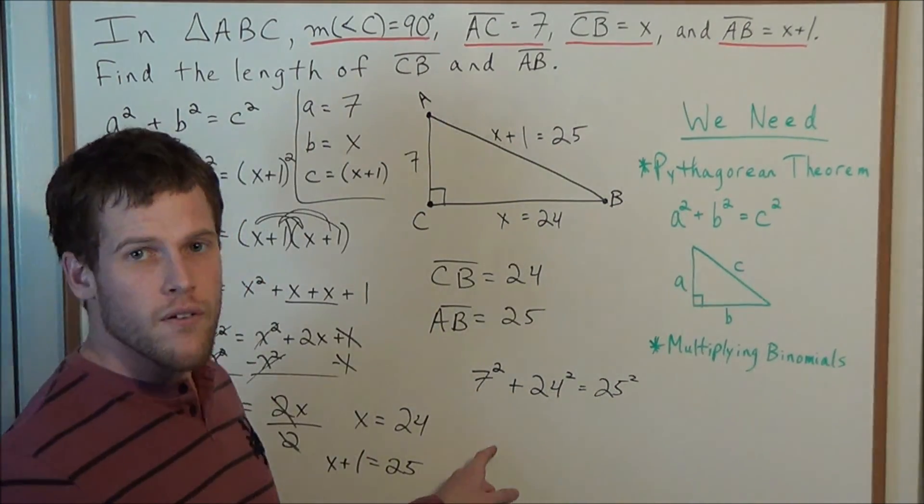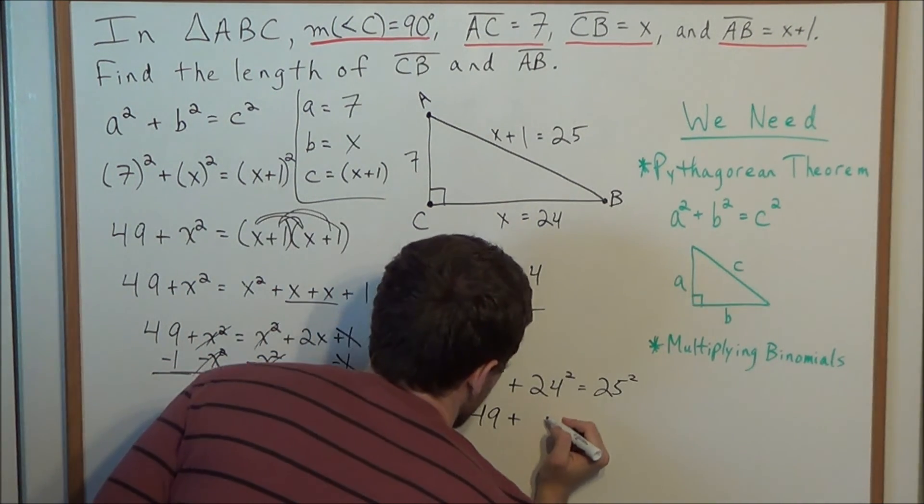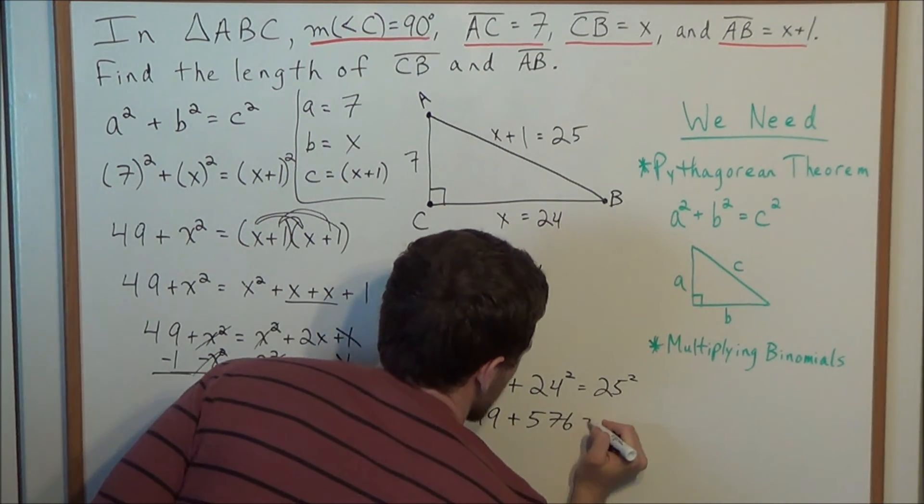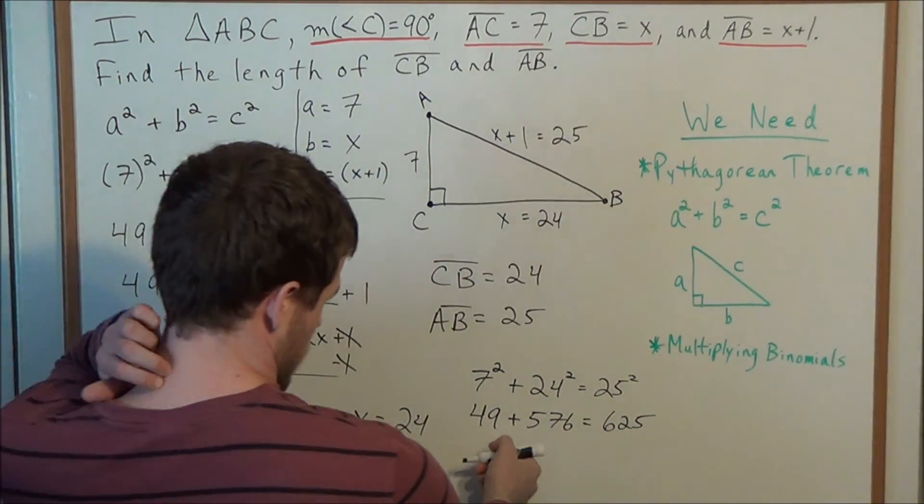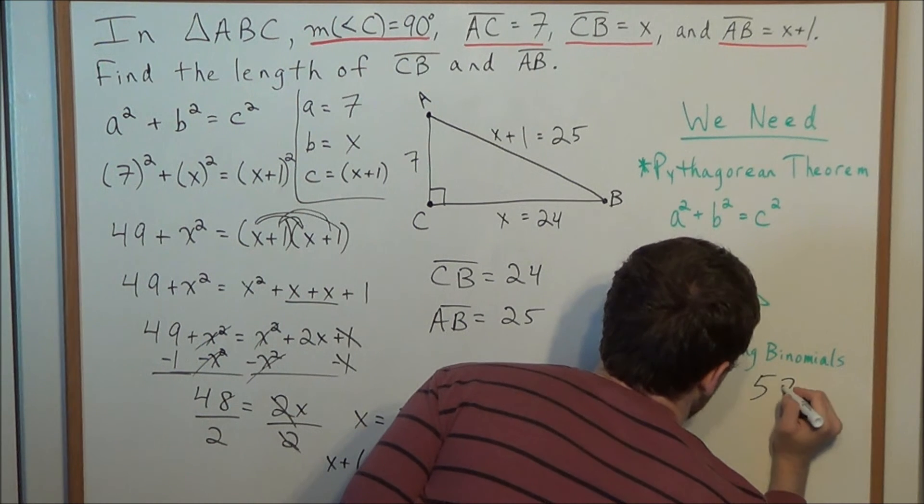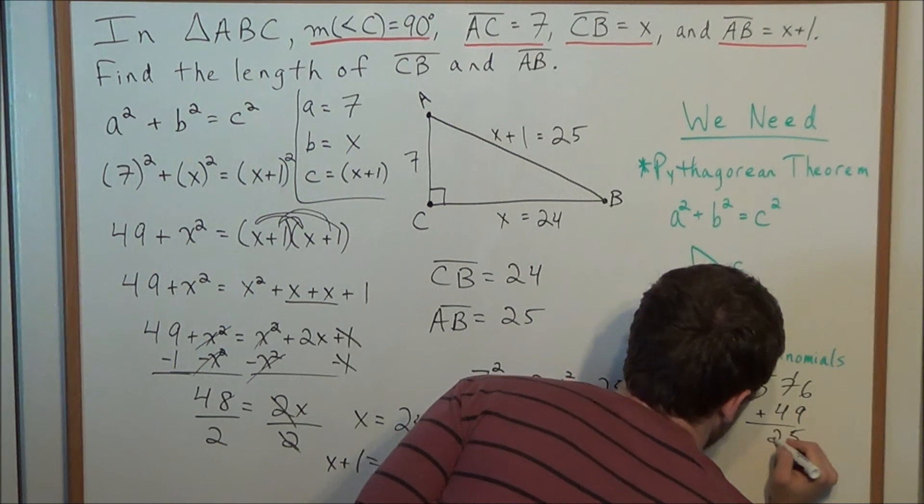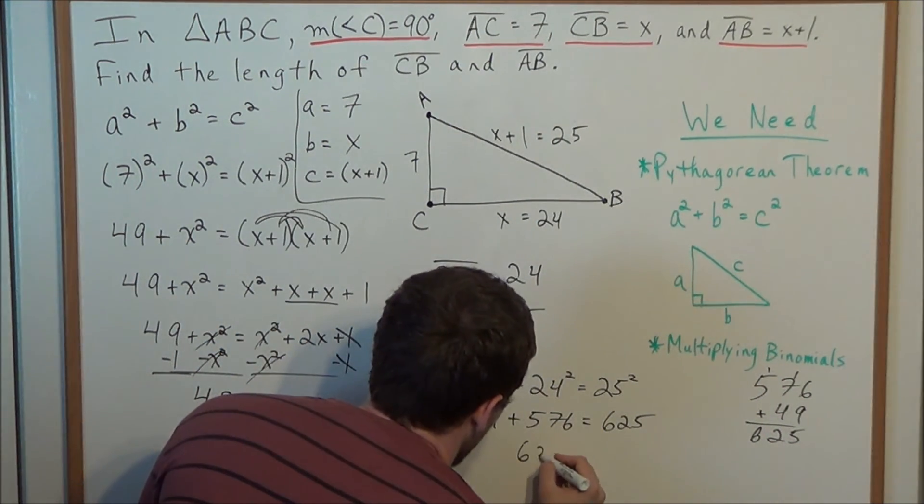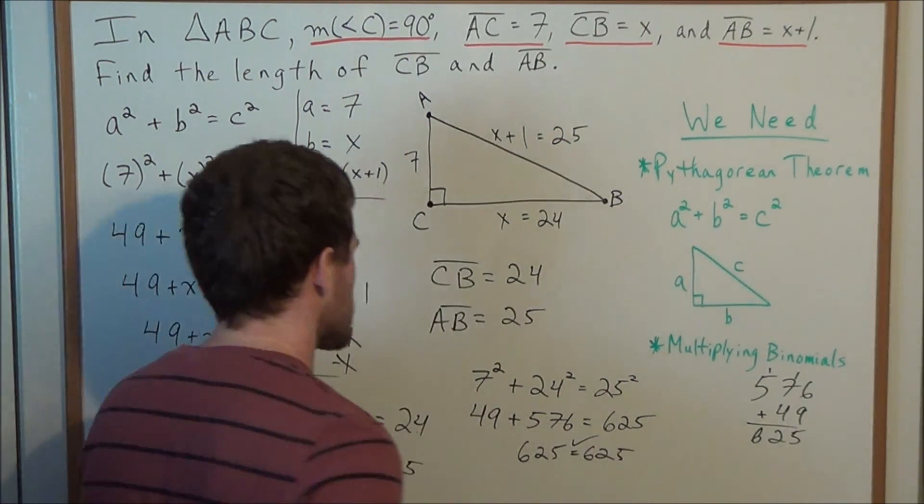So now we have 7 squared is 49. 24 squared is 576. And 25 squared is 625. So now when we add 576 plus 49, we'll do that over here, 576 plus 49. This gives us 625. So we have 625 equals 625. So these side lengths check.